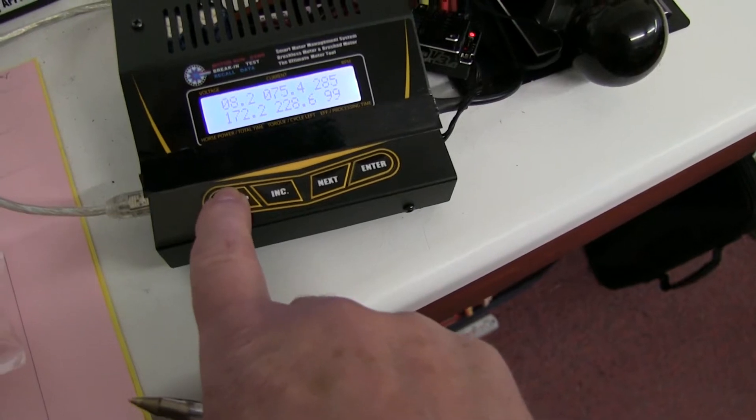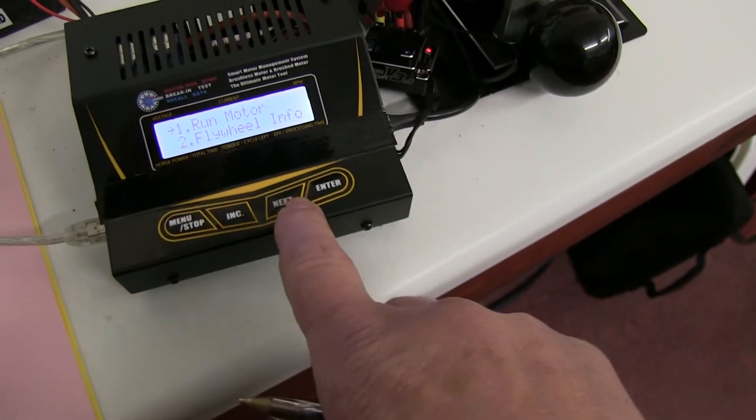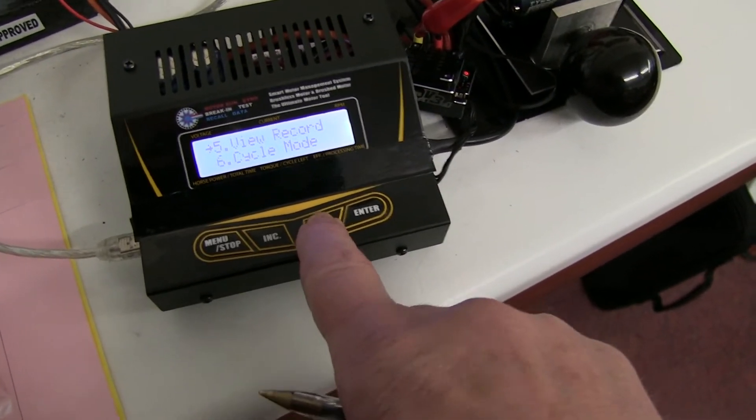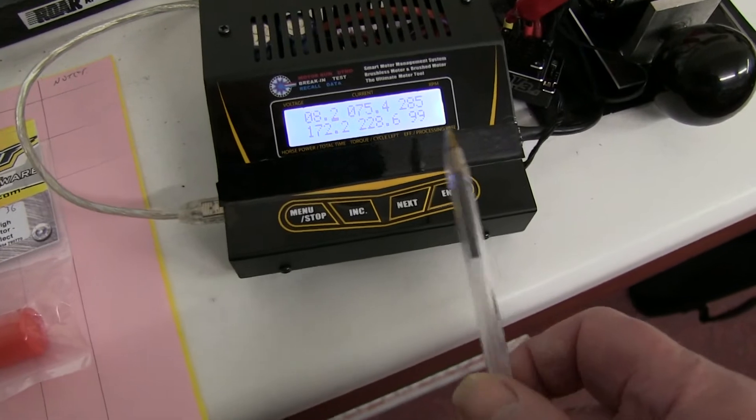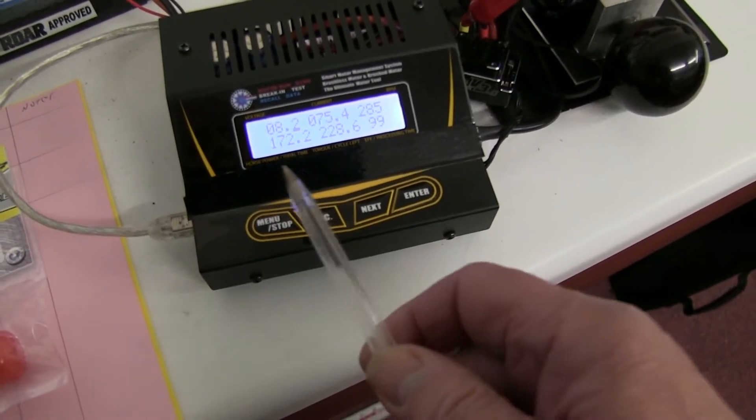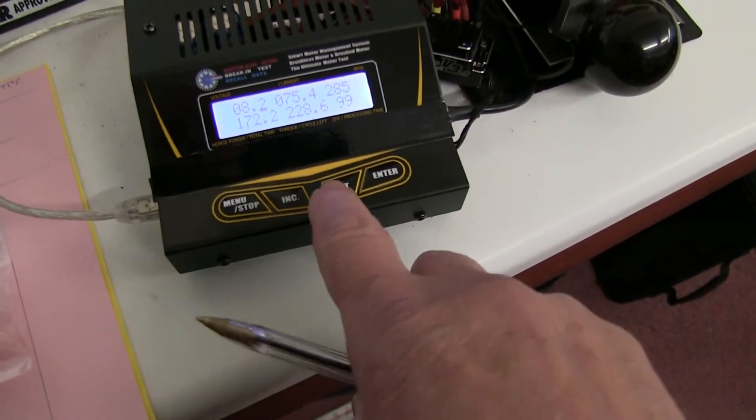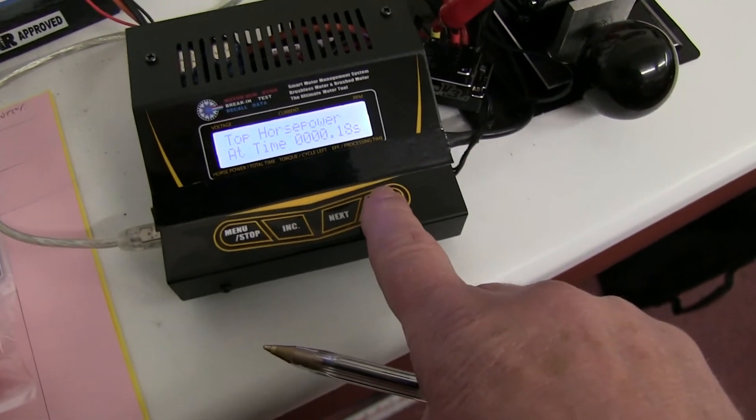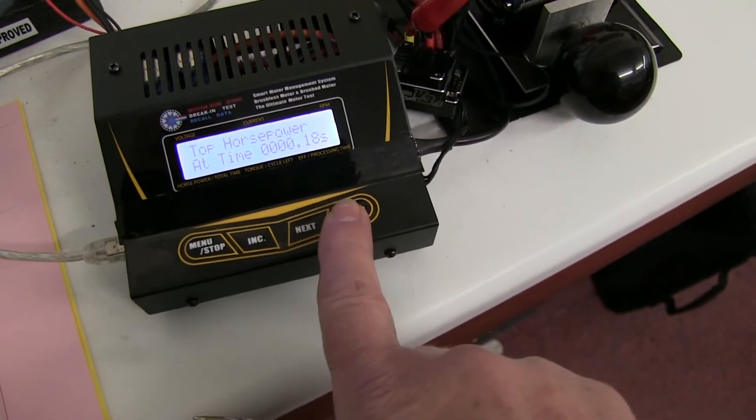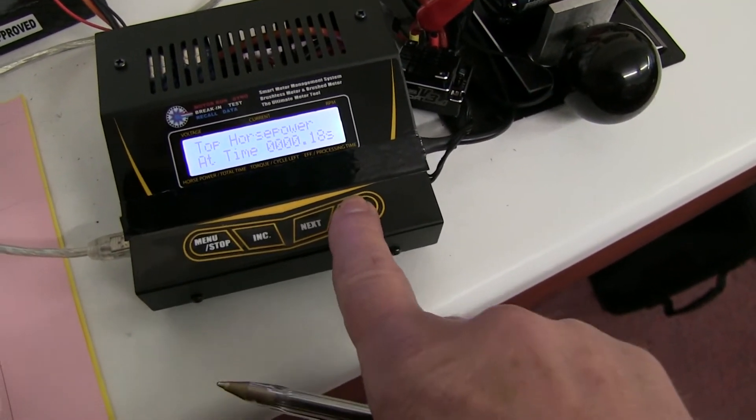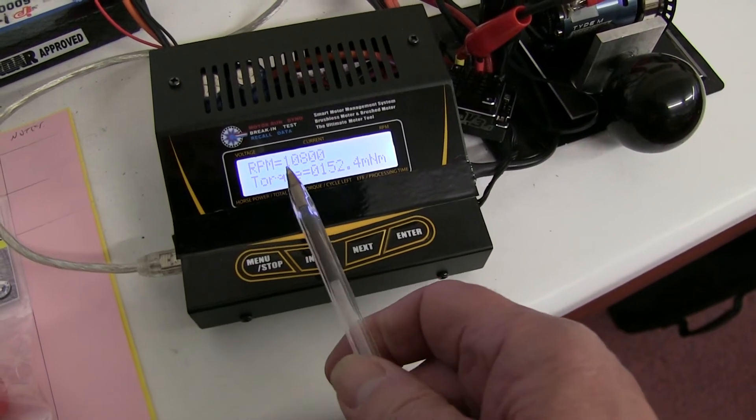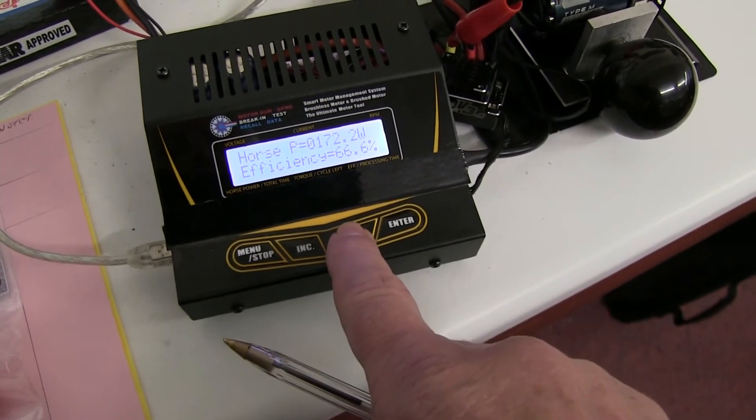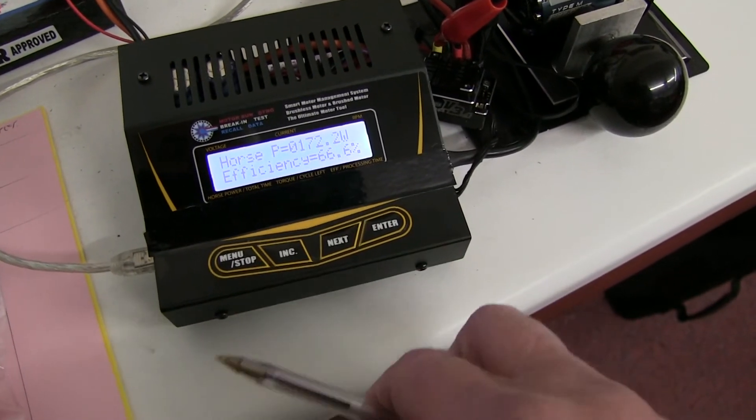And then you can read off the results which will be stored in result number one. It gives you your maximum revs, torque and efficiency. We can compare the horsepower. At 10,800 it was the maximum horsepower, 172 watts.